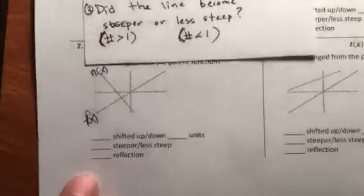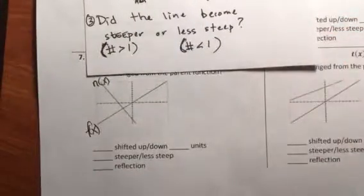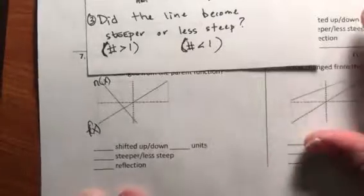So did it reflect? Did it shift up or down? Did it become steeper? Or did it become less steep?